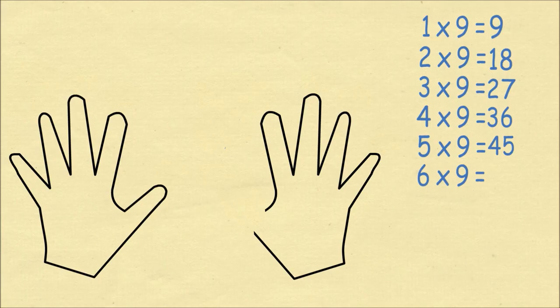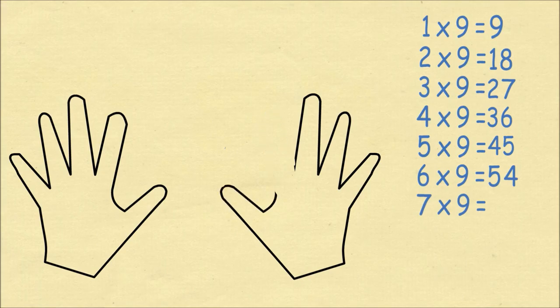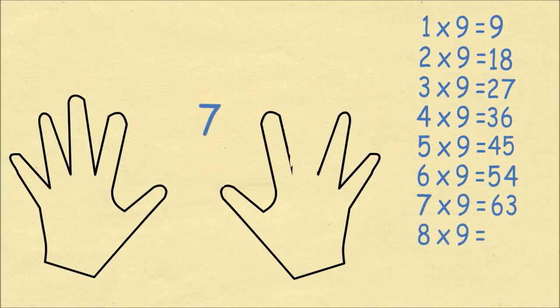Six times nine has five and four to make fifty-four. Seven times nine is six and three sixty-three. Eight times nine will be seven and two seventy-two.